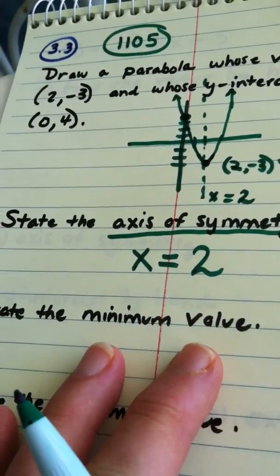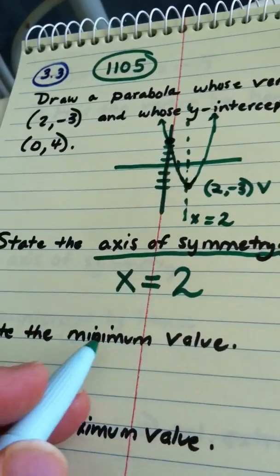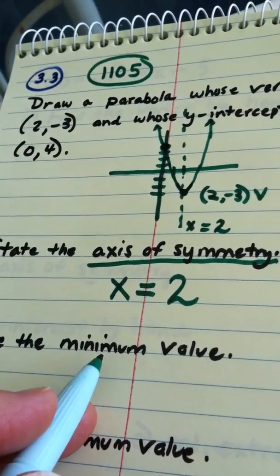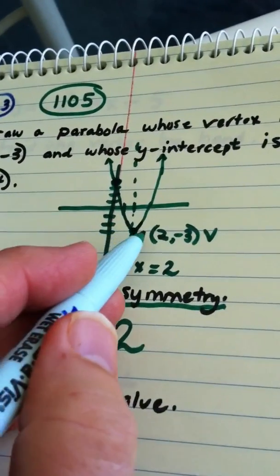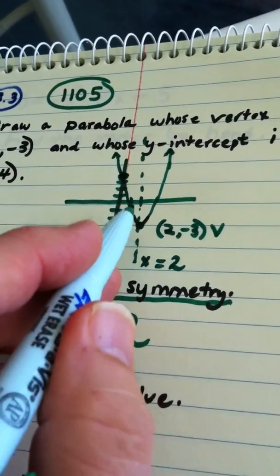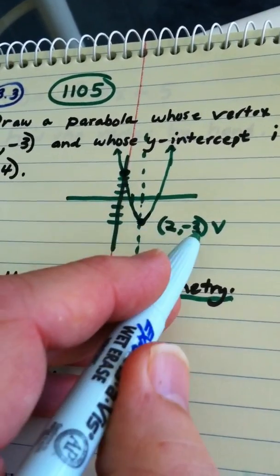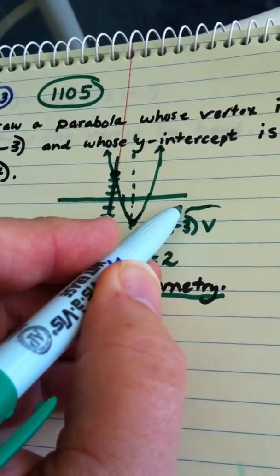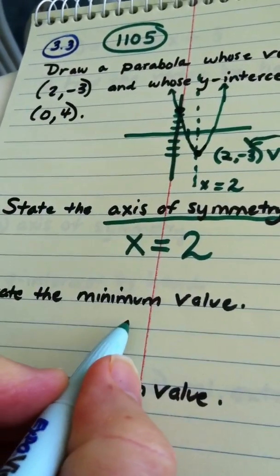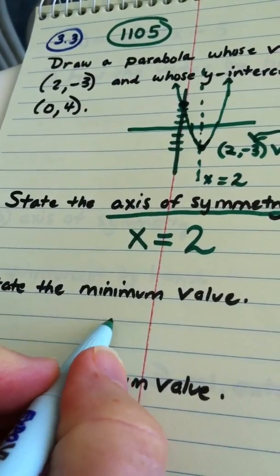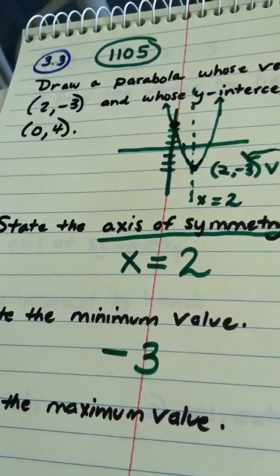It says, state the minimum value. Remember, minimum or maximum values of a function are always the y value. The smallest y value here, in other words, the lowest the graph goes, is the y value at the vertex, which would be negative 3. So, the minimum value is negative 3.